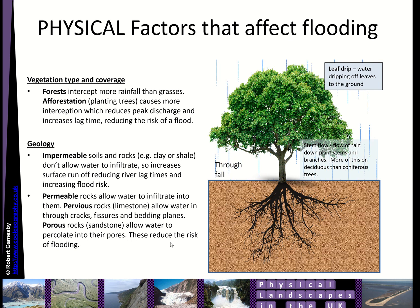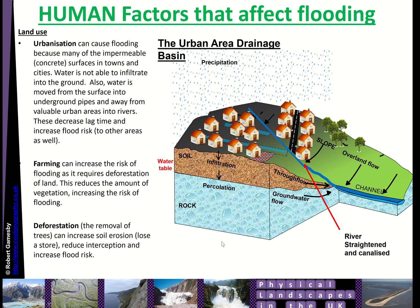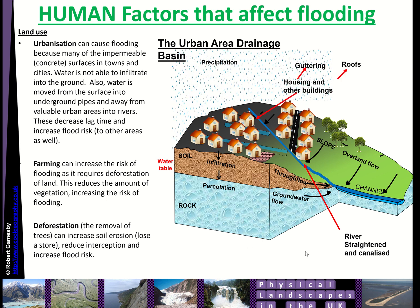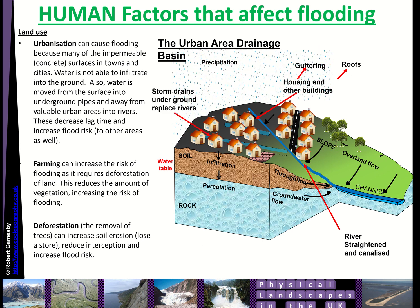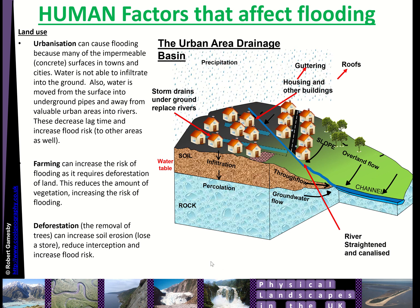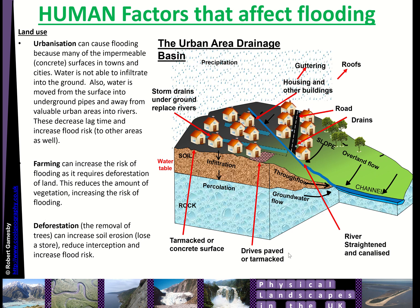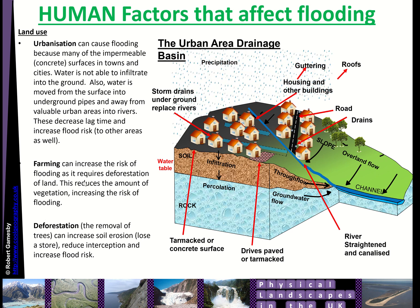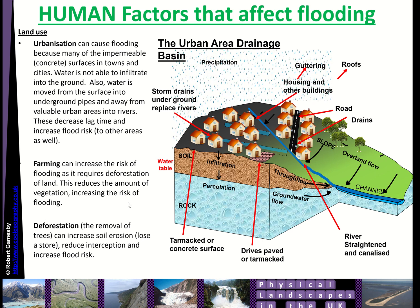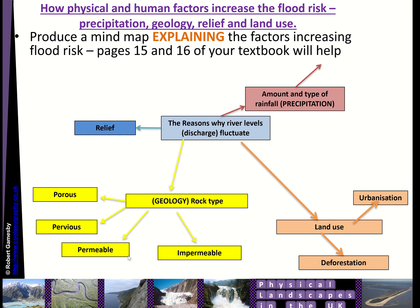Permeable rocks allow water to infiltrate, which reduces flood risk. For human factors there are three main ones. In urban areas, straightened and canalized rivers can increase flooding. Housing and buildings have gutters, roofs, and storm drains designed to get water away from housing and into rivers quickly, increasing discharges. Tarmac, concrete surfaces, and paved driveways are all impermeable, designed to get water away from the urban area. Farming can also increase the risk of flooding, as deforestation to create farmland reduces interception and increases flood risk.